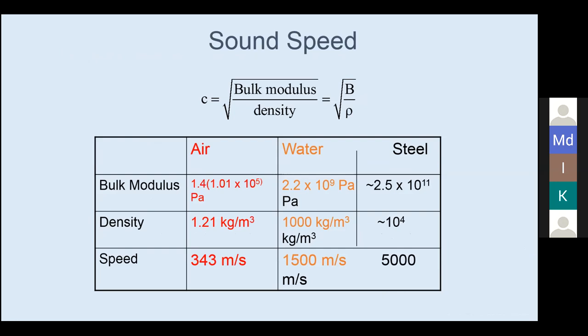How do we characterize the speed of sound? We can characterize it for different media: air, water, and materials. The longitudinal speed is the bulk modulus - related to volumetric deformation - over some density. This works for air, water, and steel. In air it depends on temperature, and it's about 340 meters per second at room temperature. Water is about 1500, with some variation with salinity and temperature. Steel is about 5000 meters per second.